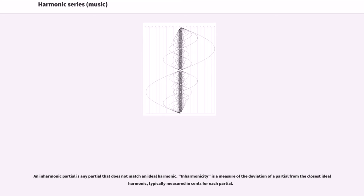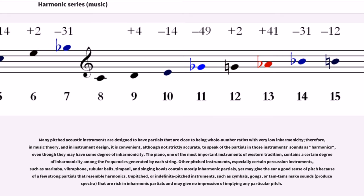Inharmonicity is a measure of the deviation of a partial from the closest ideal harmonic, typically measured in cents for each partial. Many pitched acoustic instruments are designed to have partials that are close to being whole number ratios with very low inharmonicity. Therefore, in music theory and instrument design, it is convenient, although not strictly accurate, to speak of the partials in those instruments' sounds as harmonics, even though they may have some degree of inharmonicity. The piano, one of the most important instruments of Western tradition, contains a certain degree of inharmonicity among the frequencies generated by each string.